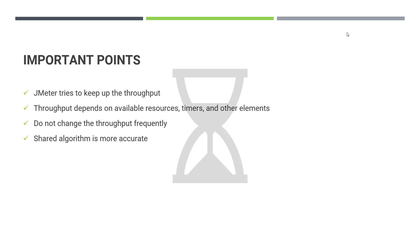JMeter always tries to keep up the throughput, but there are other influences based on available resources. If you have a very underpowered machine, the throughput target will not be achievable. Similarly, if you have many timers and other heavy elements in your test plan, it will not be able to achieve the throughput. You should also not change the throughput very frequently because JMeter takes some time to consume the throughput and does internal calculations to achieve it.